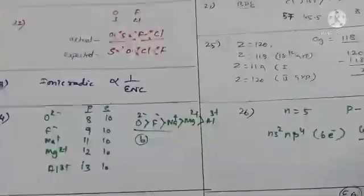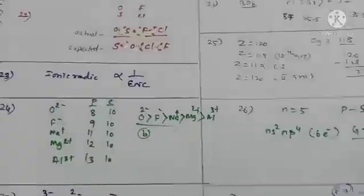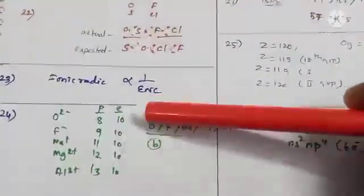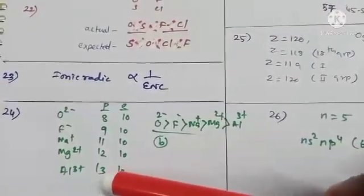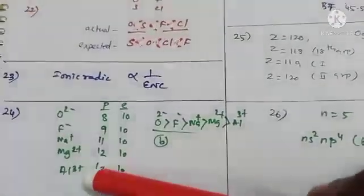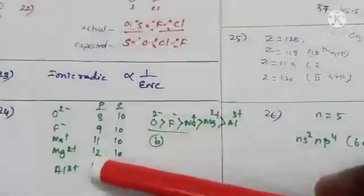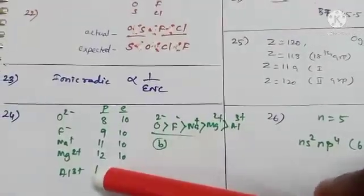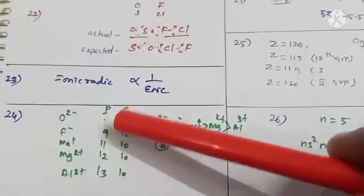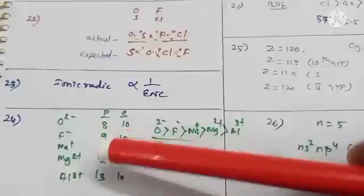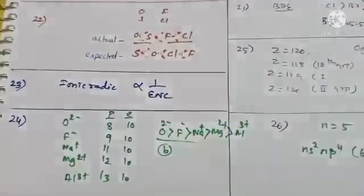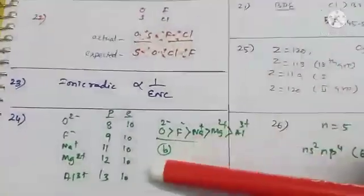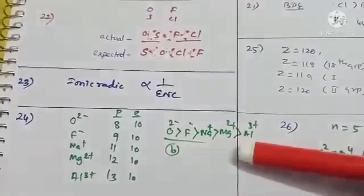The oxide ion has 8 protons and 10 electrons, and the other ions have the same number of electrons but increasing proton numbers. Greater the proton number, greater the attraction toward valence electrons. So Al³⁺ with the most protons has the greatest attraction and the smallest size. The decreasing order of size is: O²⁻ > F⁻ > Na⁺ > Mg²⁺ > Al³⁺.